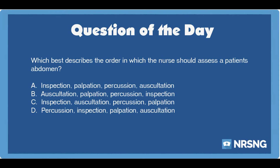When assessing any other part of the body, the nurse would normally perform assessment in the order of inspection, palpation, percussion, and then auscultation. However, when assessing the abdomen, the order is different: inspection, auscultation, percussion, and then palpation. This is because performing palpation or percussion could stimulate the patient's gastrointestinal tract, causing increased or decreased bowel sounds on later auscultation. The nurse should auscultate to hear bowel sounds first before palpation.